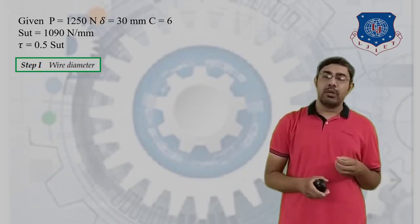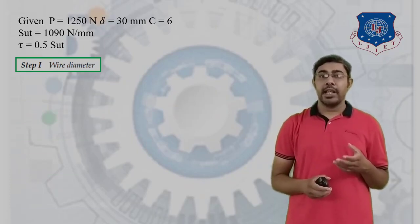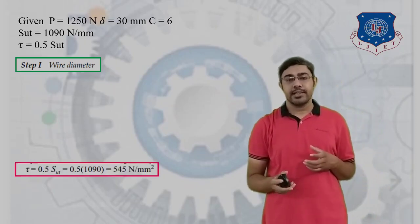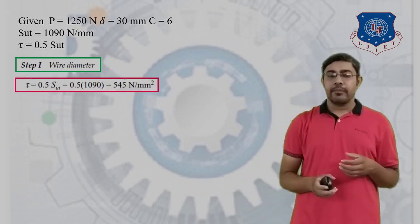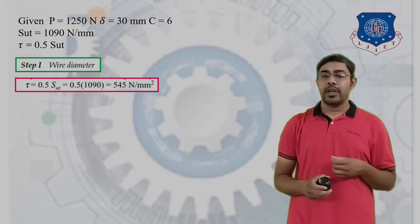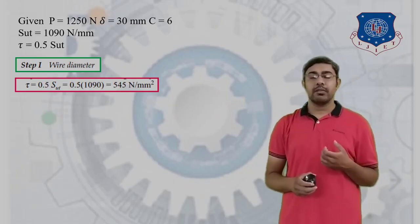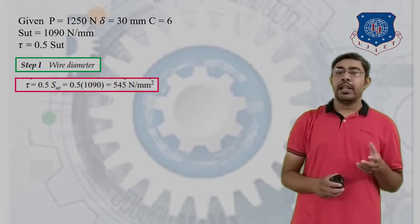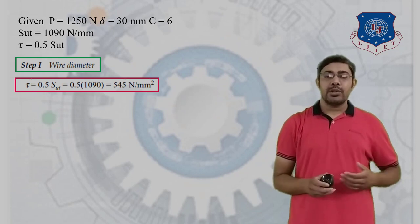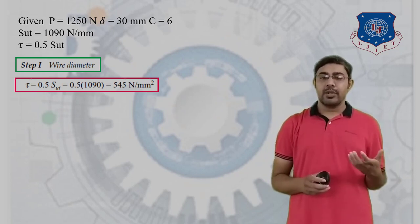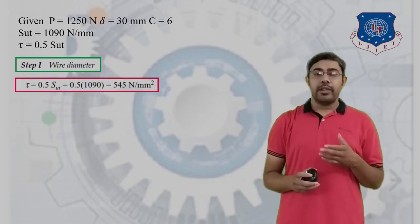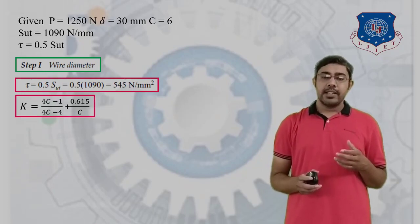Step 1: Calculate the wire diameter. To calculate the wire diameter we use the CHT equation. First we calculate tau = 0.5 × S_ut. Placing the value of S_ut = 1090 N/mm², we get tau = 545 N/mm².